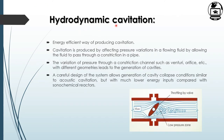Hydrodynamic cavitation is an energy efficient way of producing cavitation. Cavities are generated when liquid moves through a constriction such as a throttling valve, orifice plate, or venturi. This cavitation is produced by pressure variations in a fluid as it passes through a constriction in a pipe. The pressure variation is produced by the constriction channel — venturi, orifice, or throttling valve — and there is cavity formation during this pressure difference.